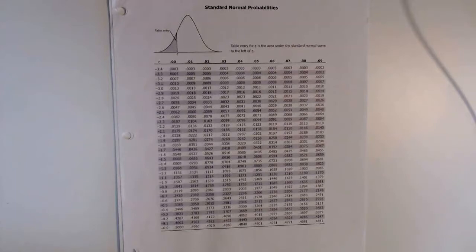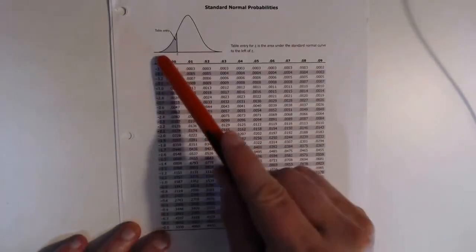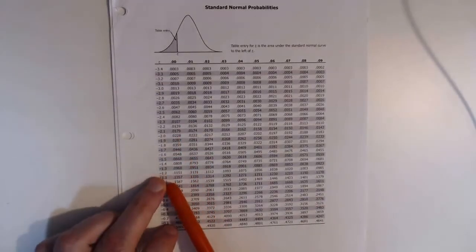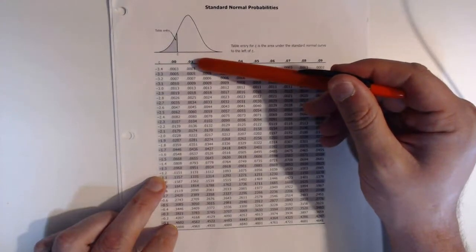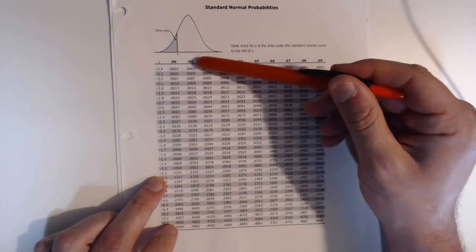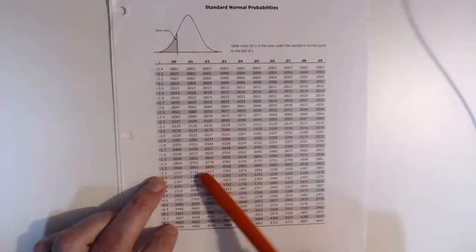For example, if you wanted to find a Z score of negative 1.21, you would go all the way down to the Z score negative 1.2, and then up to the column that indicates that digit, in this case 0.01, and you would go down to where they meet.